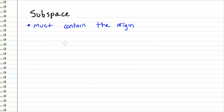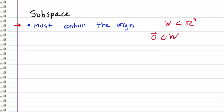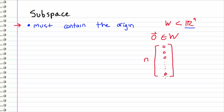Let's look at each rule. The first is that a subspace must contain the origin. In order for W to be a subspace, W must contain the origin — in other words, the zero vector must be an element of W. If our vector space is Rn, then the zero vector is just an n-dimensional vector of zeros, with n entries all equal to zero.